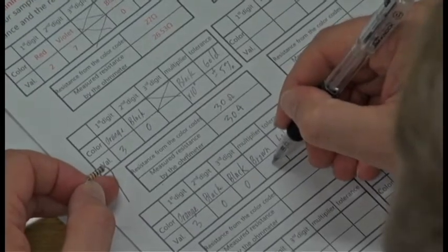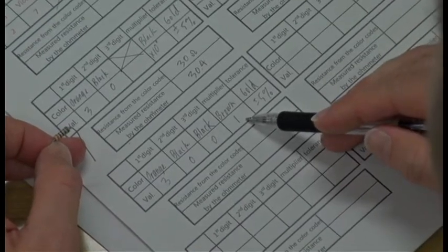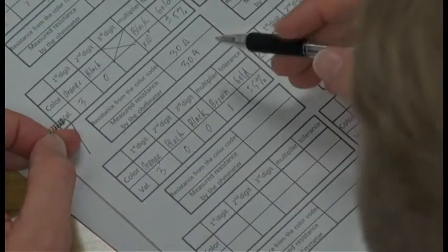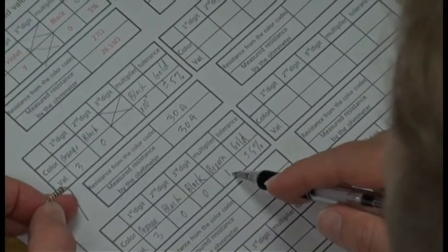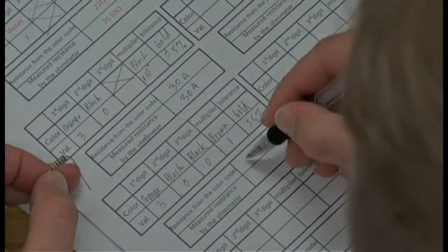Brown is one, and gold is plus or minus 5%, so that's 300 times 10 to the first power, which comes to 3,000 ohms.